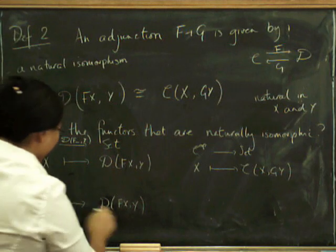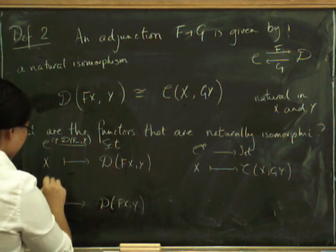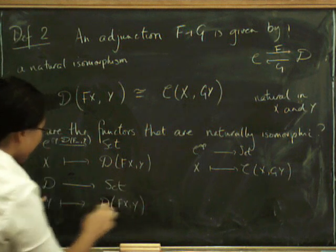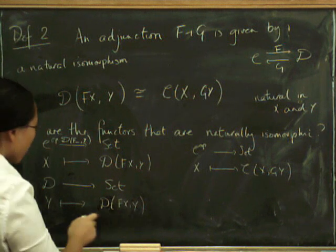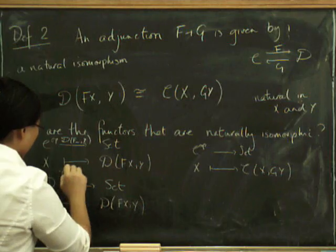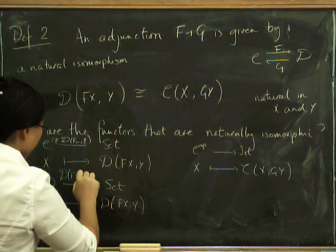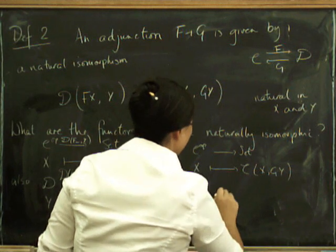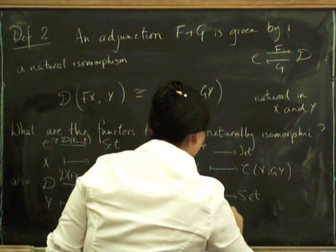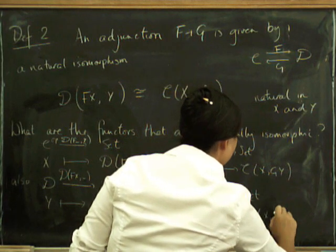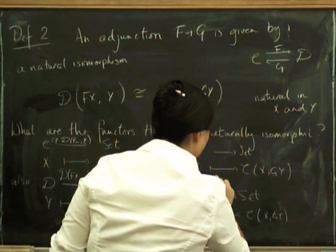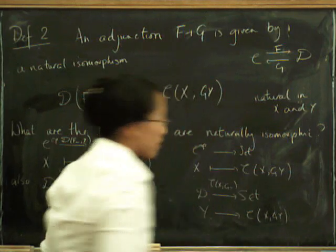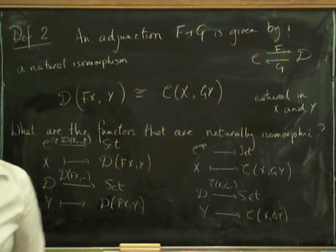The other one is sending Y to... let's do this one first. Here Y is the variable. Another way of writing this functor is D of F blank Y. This one is in fact going from D because Y is an object of D and it's going to Set. This time it's not D op because the Y is on this side. This functor is sometimes known as D of F of X comma blank because that's where the variable is. On the other side we've got the one that takes Y and sends it to C of X, G Y. This is sometimes known as C of X, G blank. So that's where the natural isomorphisms are.